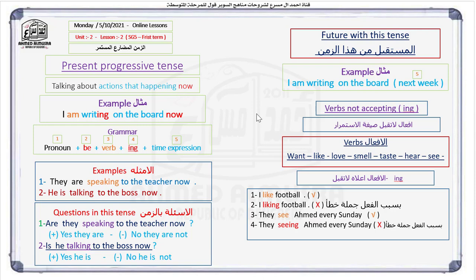This tense is talking about actions that are happening now, at the same moment. Look at the example: 'I am writing on the board now.' This tense has five basic elements: pronoun, be verb, main verb, -ing, and a time expression for the progressive.